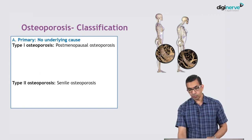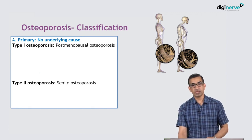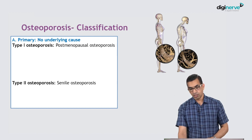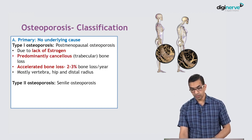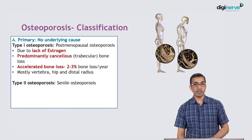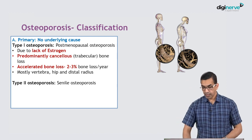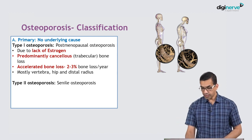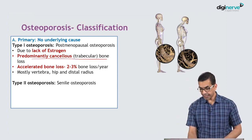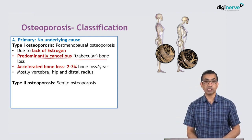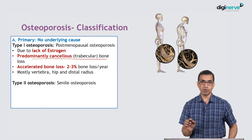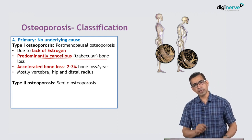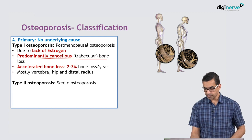Coming to primary osteoporosis where there is no underlying cause: Type 1, which is postmenopausal, is because of lack of estrogens. It predominantly affects cancellous bone loss — remember, predominantly cancellous, though cortical is also affected but to a lesser degree.